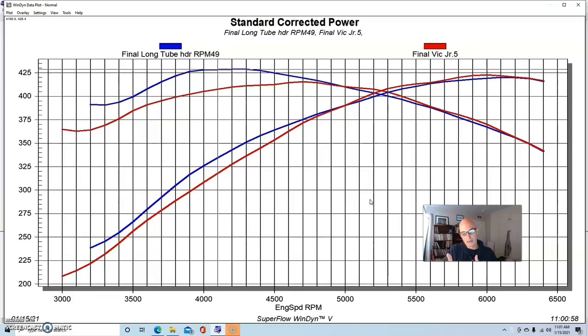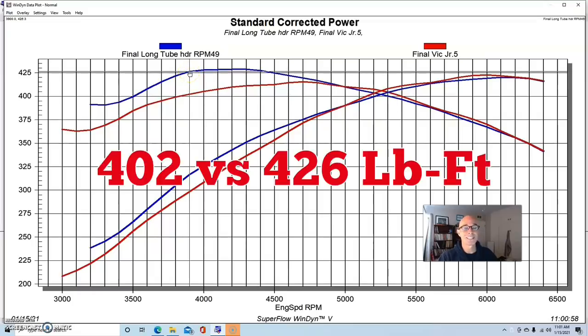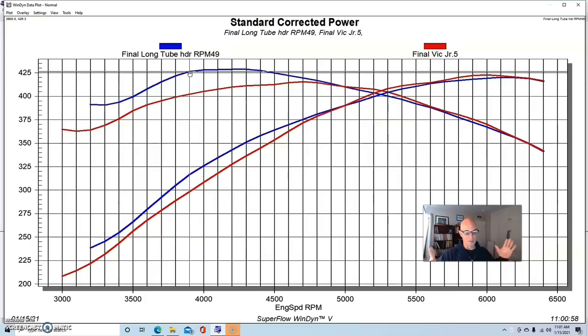Sometimes it could be on a 351 or a stroker 351, a 408, the crossover may be very low. The single plane might start making more power at 4,000 RPM, let's say. But in this case, the crossover was between 4,900 and 5,000 RPM, right in here, right in this range, where the single plane started making a little bit more power than the dual plane. Below that point, the difference was substantial. At 3,900 RPM, we had 402 foot pounds for the single plane and 426 foot pounds for the dual plane. So you can see in that area from 3,200 all the way up to almost 5,000, the dual plane was definitely better.